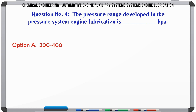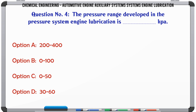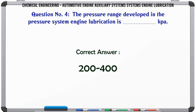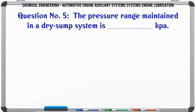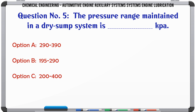The pressure range developed in the pressure system of engine lubrication is (kPa): a) 200-400, b) 0-100, c) 0-50, d) 30-60. The correct answer is 200-400.